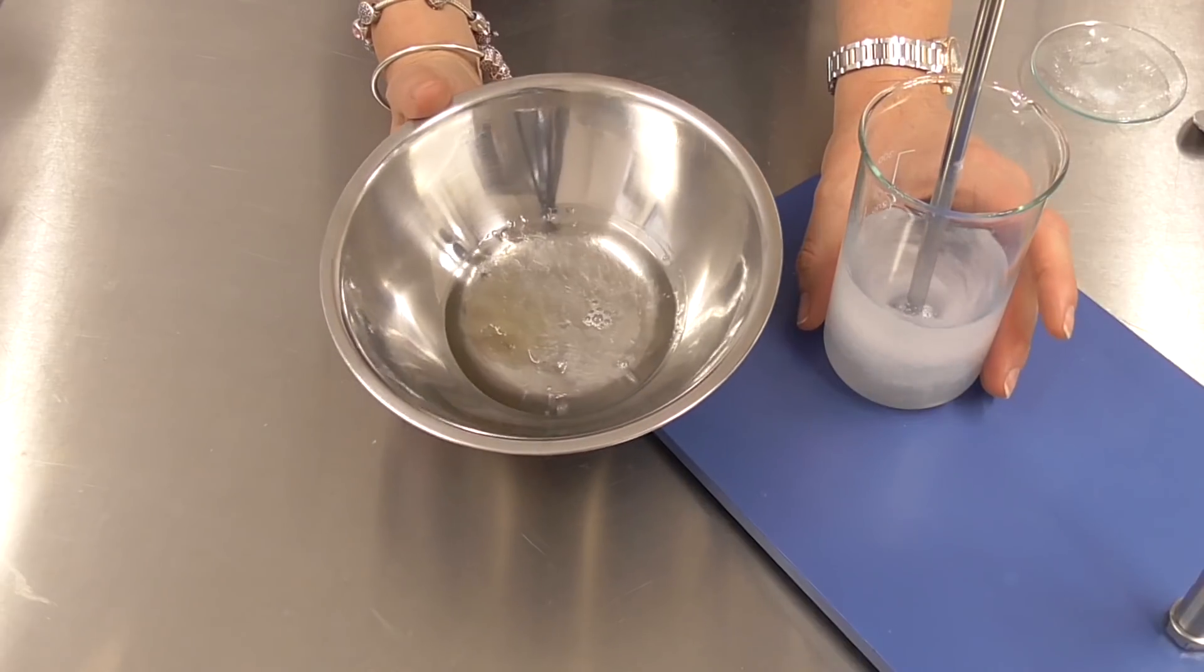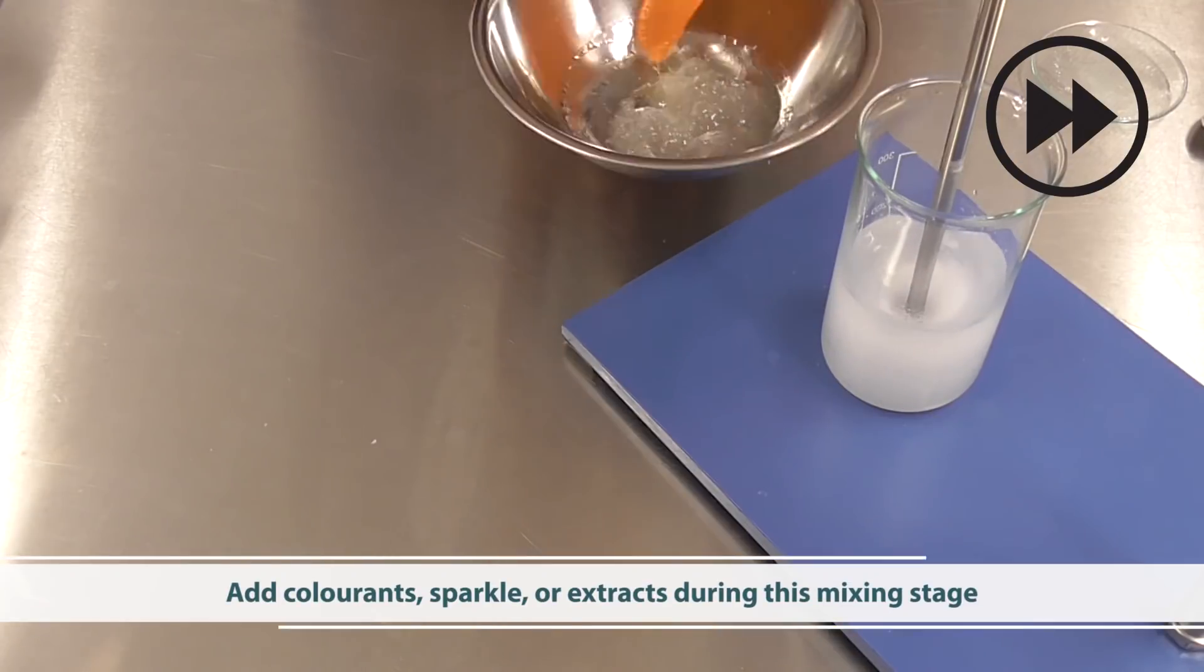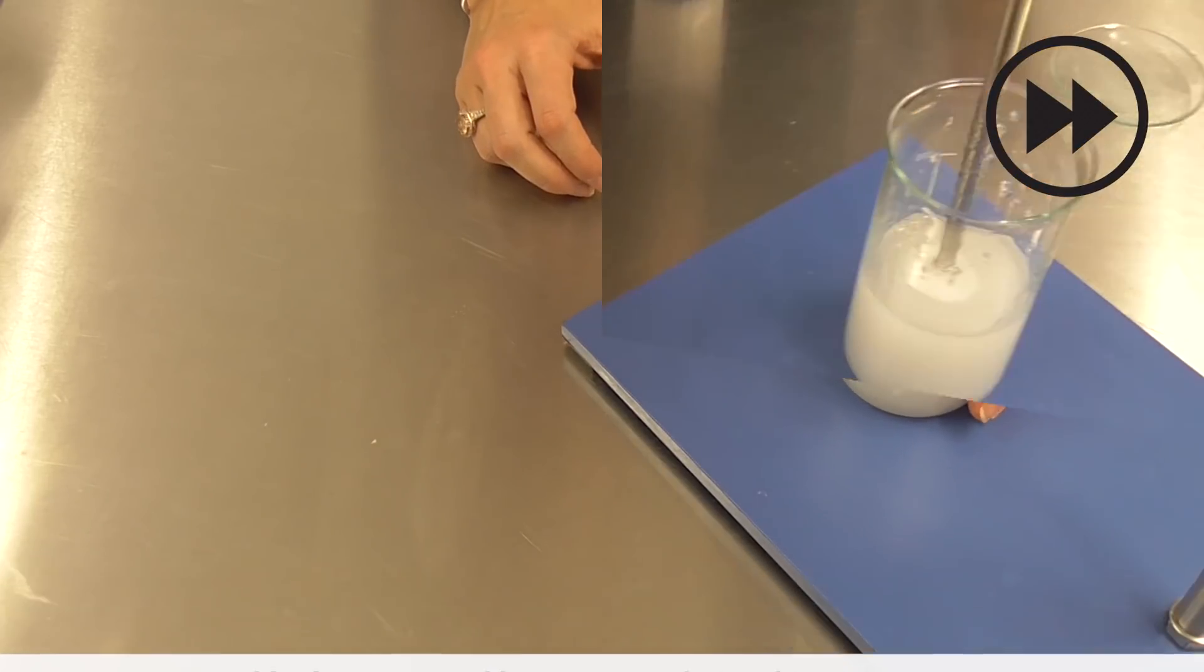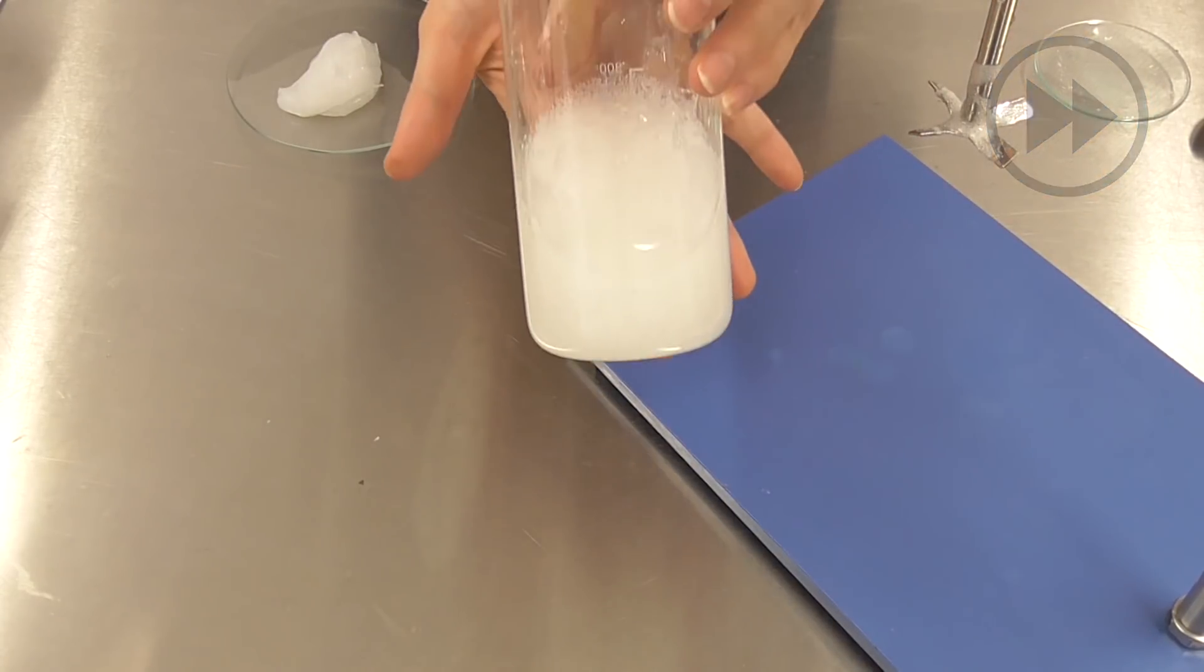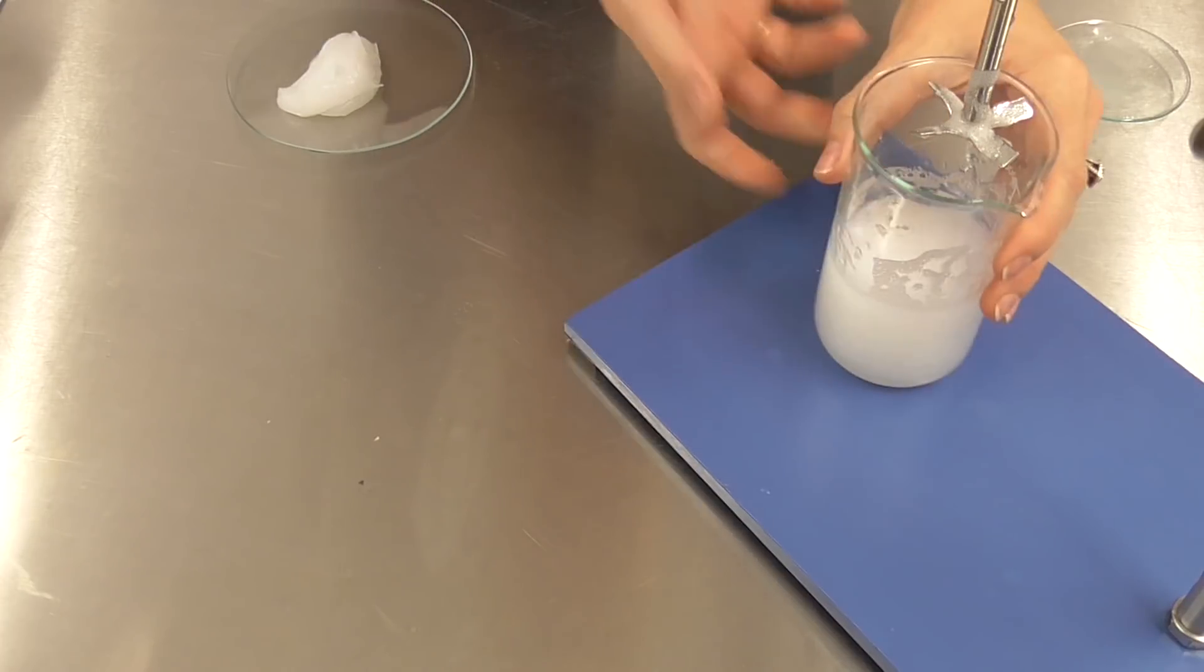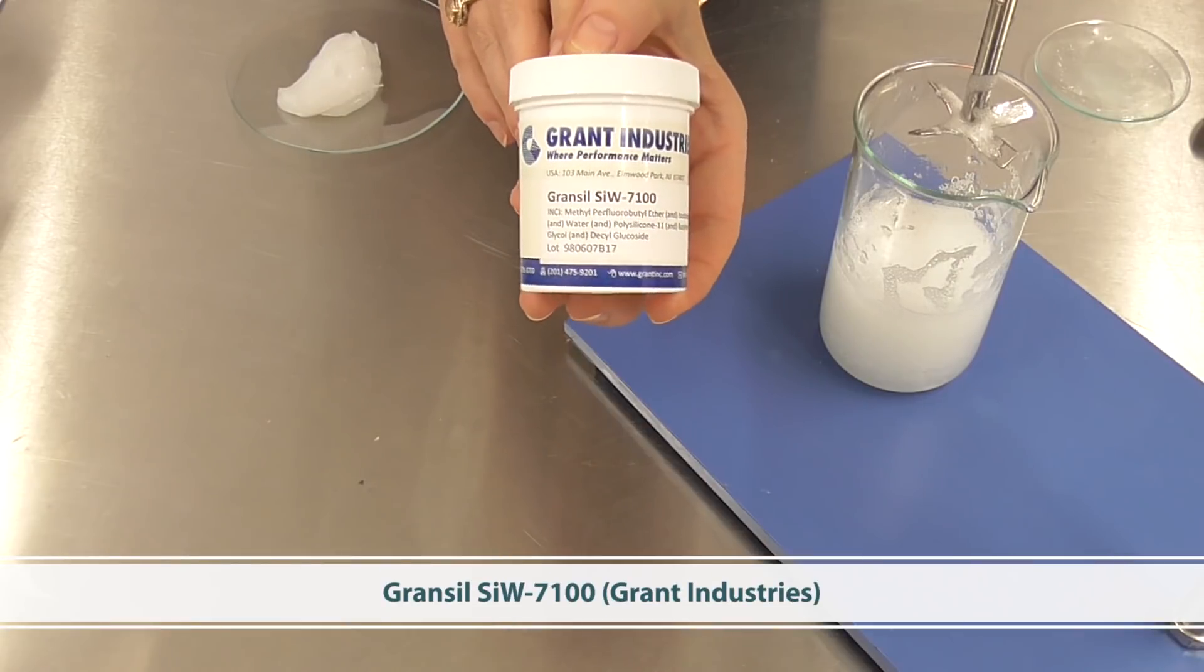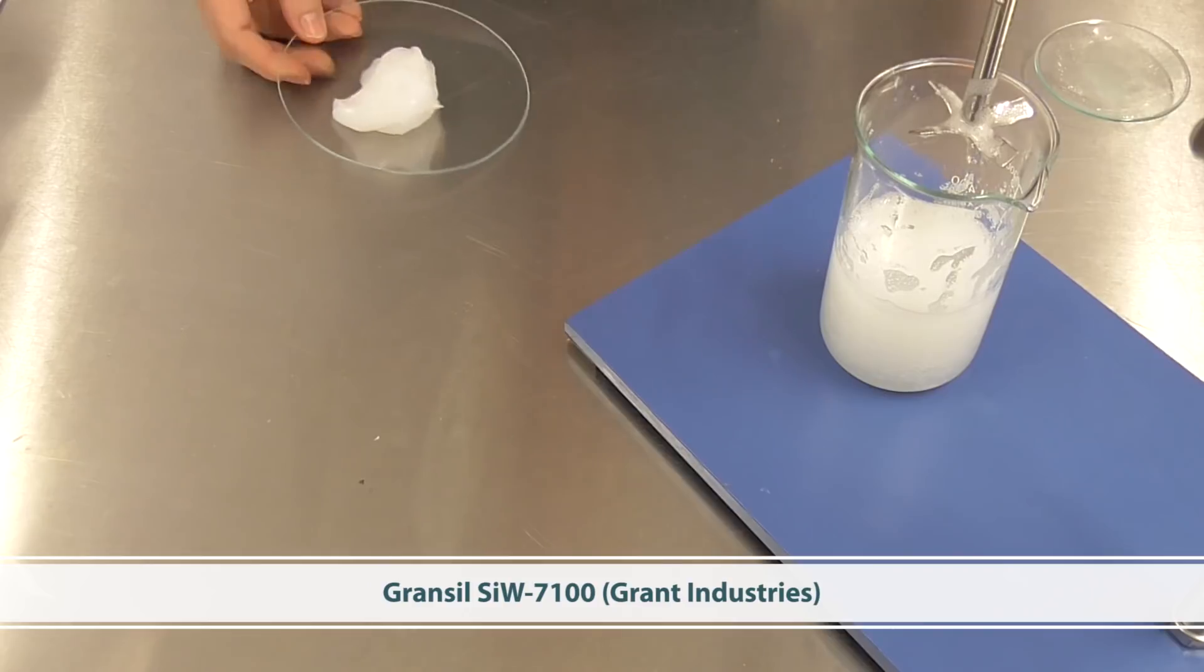I've also got TEA present in here to help neutralize my carbomer. This is my product so far. Now I'm going to add that really cool material, I'm using Grand Seal SIW 7100 from Grand Industries, and then we're going to mix it through.